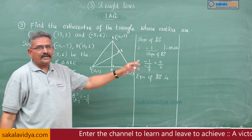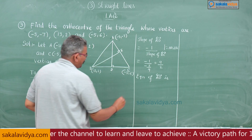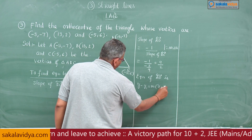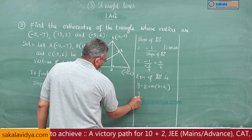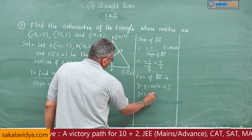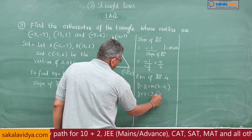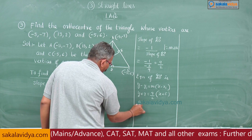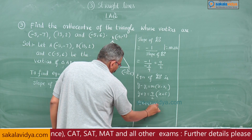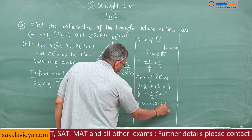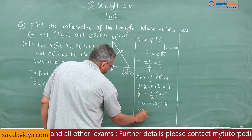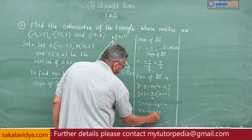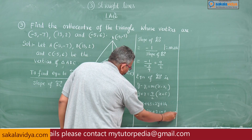Using the point-slope form y minus y1 equals m times x minus x1: y plus 7 equals 9 by 2 times x plus 5. This gives 9x plus 45 equals 2y plus 14. Bringing to one side: 9x minus 2y plus 31 equals 0. Call this equation 1 — the equation of altitude AD.